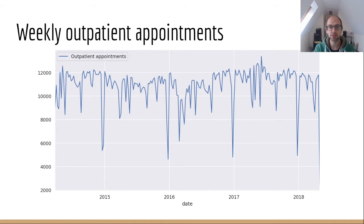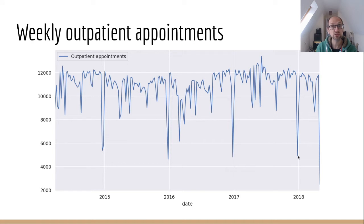We can see when we look at this that there are potentially patterns within the data. In particular, we can see around winter there's a big dip, and that appears to occur every year. That's useful information that some form of quantitative method can use to project this time series into the future. There may be other signals within this data that aren't easy to see by eye, and we would use some quantitative tools to pull out that information and build that into a forecast.